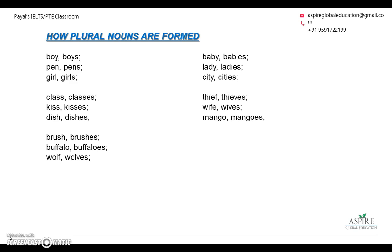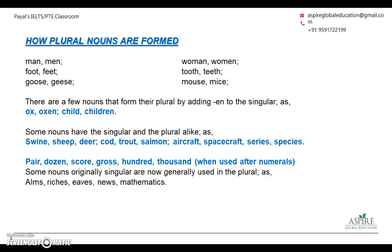For a few other words you will have to change a letter to create the plural: man becomes men, woman becomes women, tooth becomes teeth, mouse becomes mice, goose becomes geese. Some nouns form their plural by adding 'en', like ox becomes oxen and child becomes children. There are also words like sheep, deer, aircraft, and salmon where the singular and plural remain the same — no need to worry about their plural form.